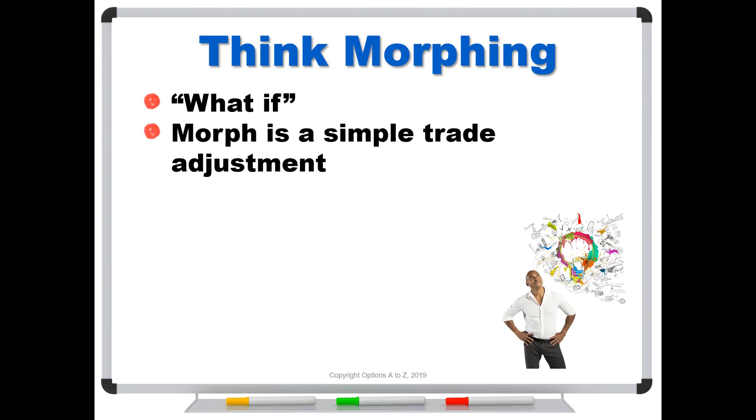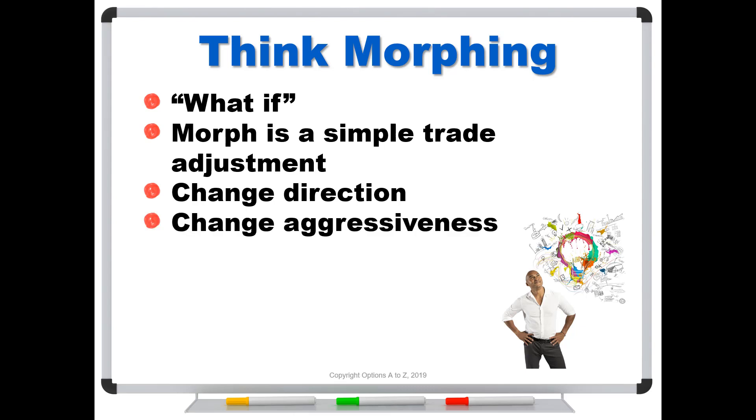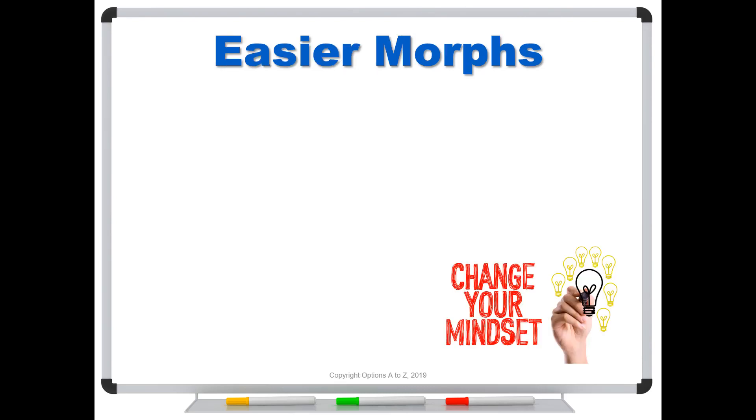A morph is a simple trade adjustment that allows you to do that. There are a lot of reasons why we might morph, but it's typically to either change direction from bullish to bearish or vice versa, or to change the aggressiveness to make it even more bullish, add some more deltas in a particular range, or make it more bearish.